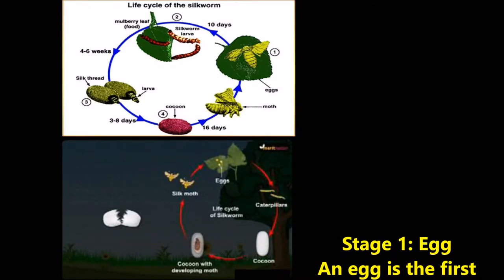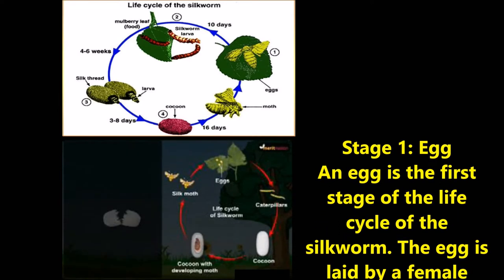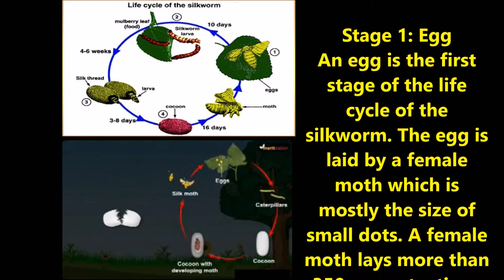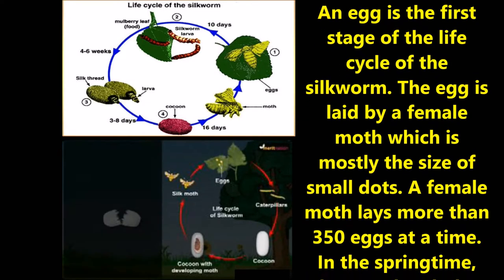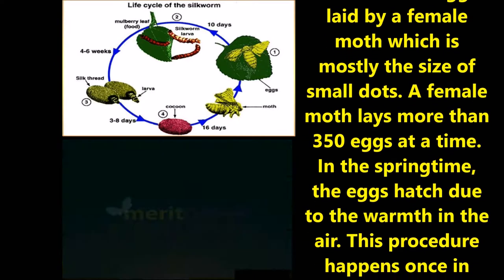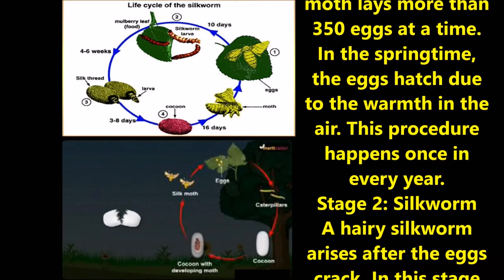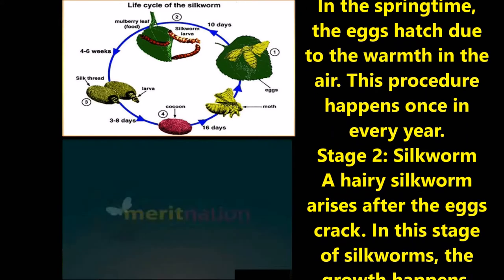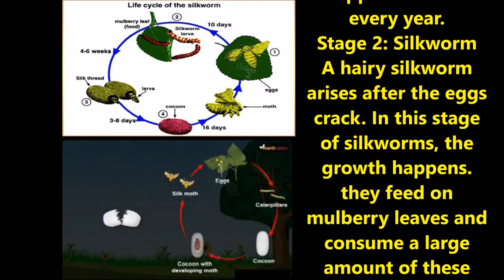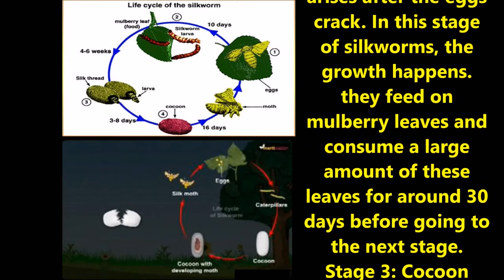Stage one - Egg: The egg is the first stage of the life cycle of the silkworm. Eggs are laid by a female moth, mostly the size of small dots. A female moth lays more than 350 eggs at a time. In spring, the egg hatches due to warmth in the air, and this happens once every year. Stage two - Silkworm: A hairy silkworm arises after the egg cracks. In this stage the silkworm grows, feeding on mulberry leaves and consuming a large amount of these leaves for around 30 days before going to the next stage.